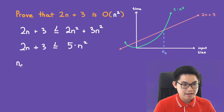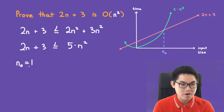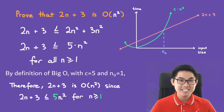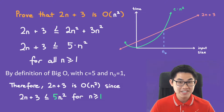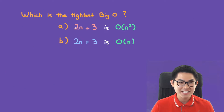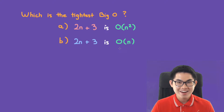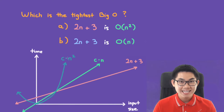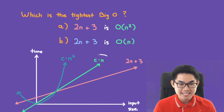Our c is 5. For n naught, trying n equals 1 confirms the inequality is true. Therefore 2n plus 3 is O(n²) since 2n plus 3 is less than or equal to 5n² for all n greater than or equal to 1. We've now established that 2n plus 3 is O(n²) and also O(n). On a test, if asked for the tightest Big O, we choose the one closest to our original function, which is O(n).